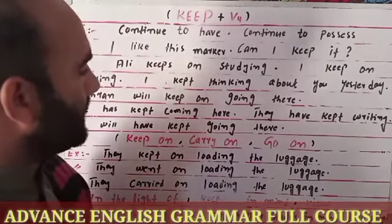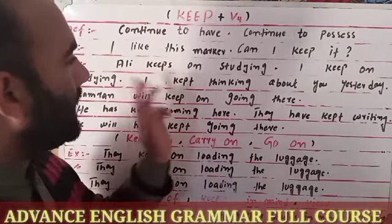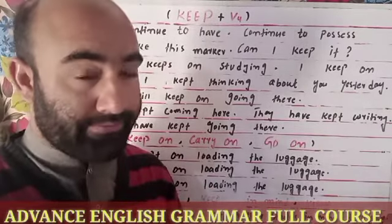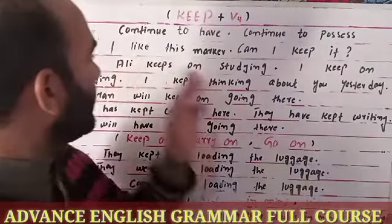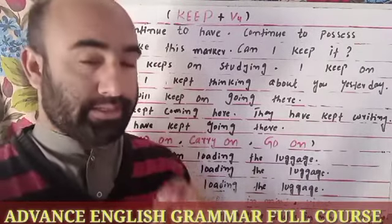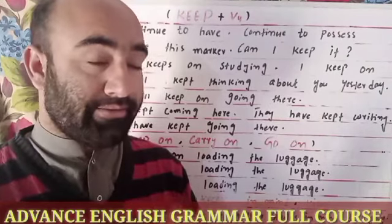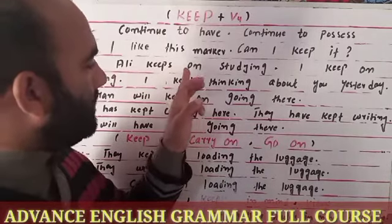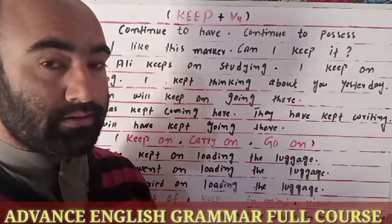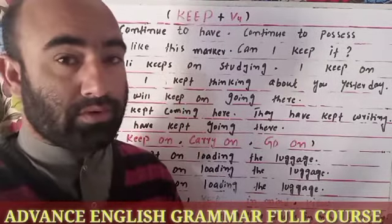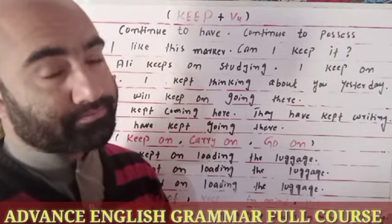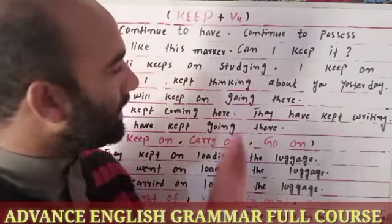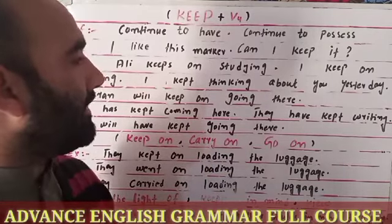For example: 'Ali keeps on studying.' This means to continue to study for a long time. This is the simple present indefinite sentence. You can put 'on' in this sentence — it depends on you, either you want it or not. 'Ali keeps studying' is also correct. This is the structure of the present indefinite tense.